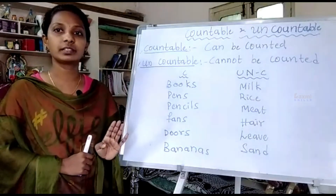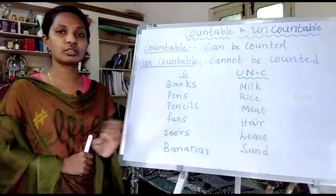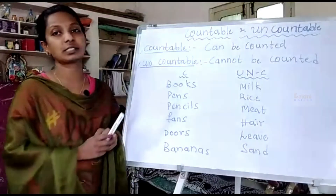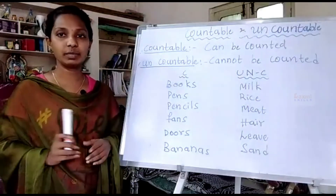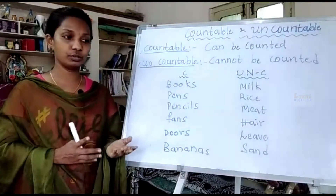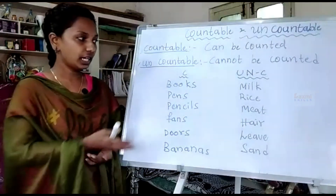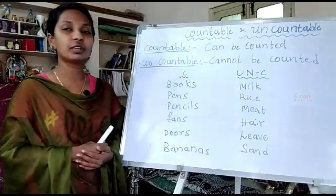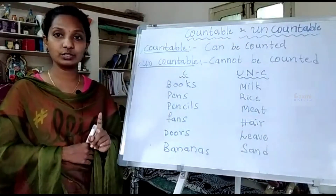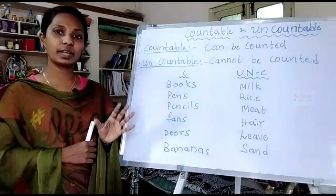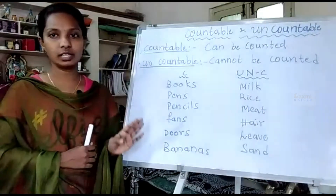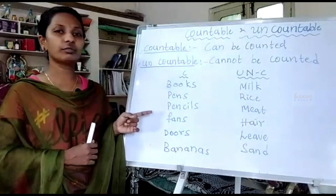Pens are countable — 'Yesterday I brought three pens.' For uncountable, take rice: we say 'give me a bag of rice' or 'one kg of rice.' That is also mentioned in bulk as a quantity, not as a number.